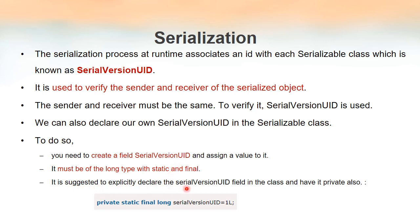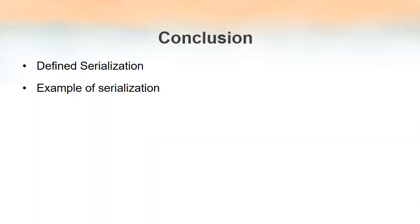It is suggested to explicitly declare the SerialVersionUID field in the class and to make it private as well. So it will look somewhat like this: private static final long serialVersionUID and then assign the number. We shall conclude now.